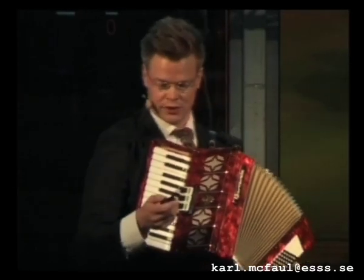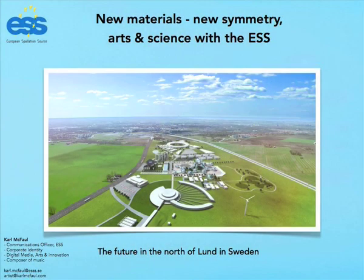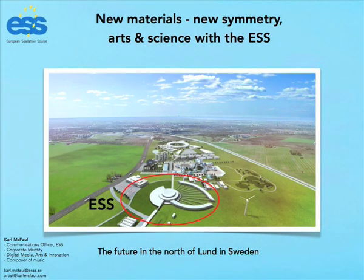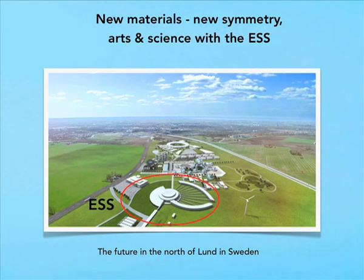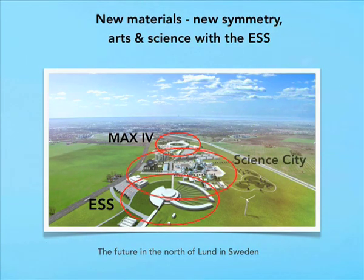I never knew Mona Lisa was into electronica. So this is the future in the north of Lund — well, it could be. It's an artistic interpretation of the possible future. In the north of Lund, we will build one of the three largest material research centers in the world. In the foreground we see the European Spallation Source, ESS, where you will study material on the atomic level with the help of neutrons. And the ring in the background is Max IV, where they will study materials with photons. And in the middle, you have the Science City.